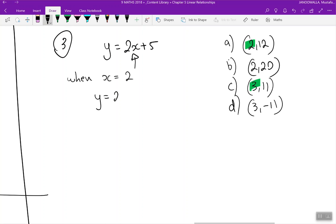y equals 2 times 2, where I have x I put 2, plus 5. So y is 4, 2 times 2 is 4, plus 5, y equals 9.